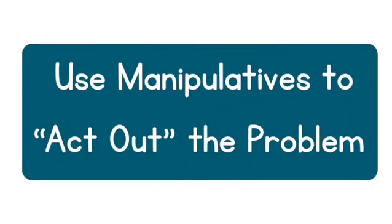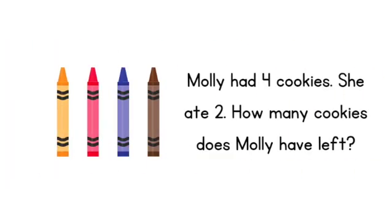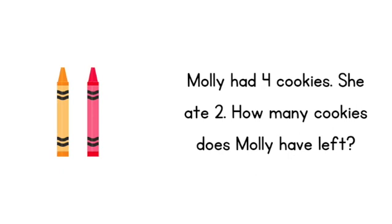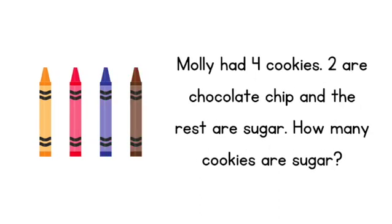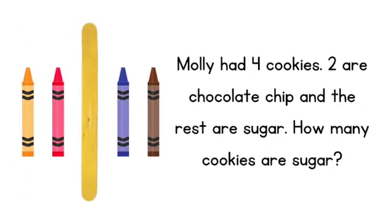The second strategy I have is to use manipulatives to act out the problem. If this is a take away problem, set out the objects and physically remove the appropriate quantity so your child can see what's left. If it's a part-whole, set up the whole and put a divider after the known part so your child can see the unknown part on the other side and be able to physically count it.